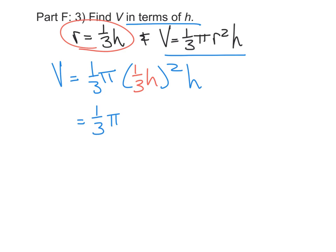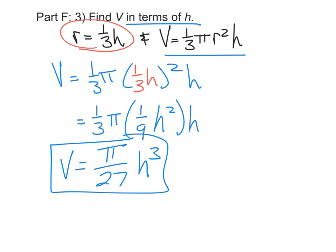We'll have 1/3 pi times 1/9 H squared times H, and so that'll end up being pi over 27, and then H squared times H is H cubed. There we go.